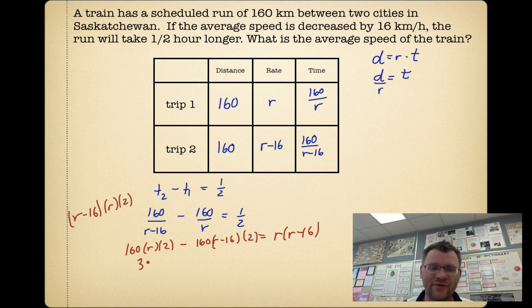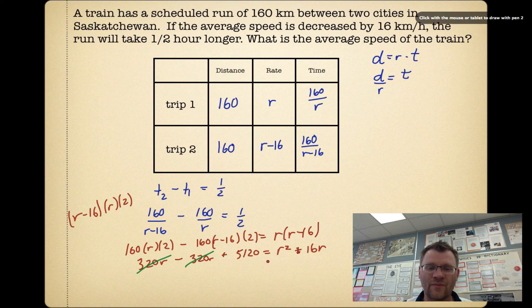So when I multiply this out, I get 320r. I get minus 320r plus 5120. And over here, I get r²-16r. These two things cancel each other out, 320r minus 320r, which means I can move the 5120 over to the other side. So I get 0 equals r²-16r-5120.